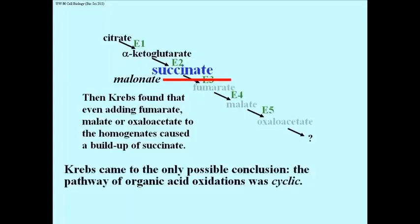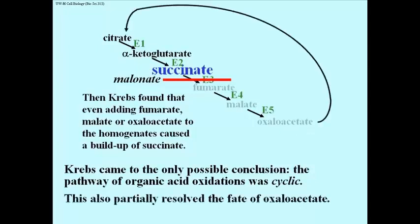Krebs drew the only possible conclusion, namely that the pathway of organic oxidations that he was looking at was not a linear pathway, but was cyclic. And here we see the cyclic pathway. The fate of oxaloacetate then is partially resolved, at least it doesn't have that big question mark after it.